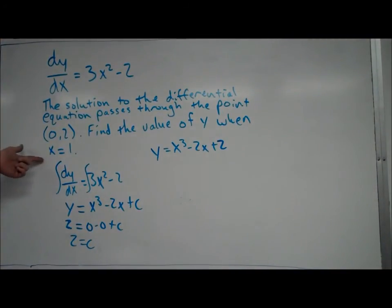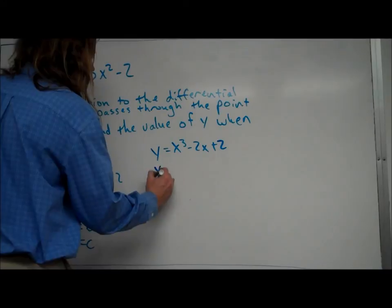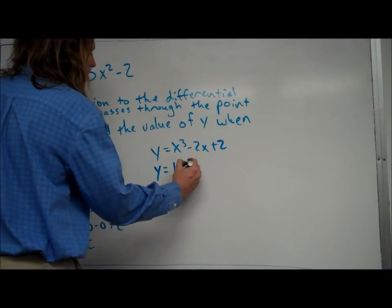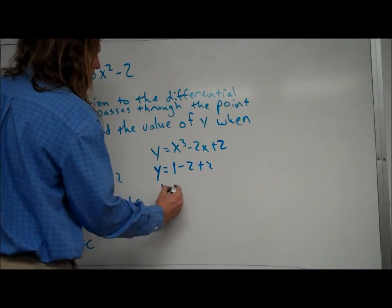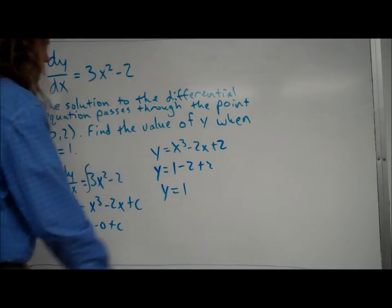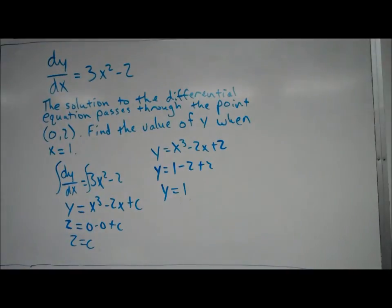So all I do here, I just take 1, plug it in for x, and I can find out what y is when x equals 1. So I have 1 to the third is just 1, minus 2 times 1 is going to be 2, plus 2. So y is just equal to 1. When x equals 1, y happens to be 1 also.